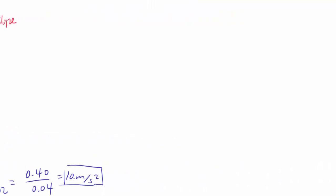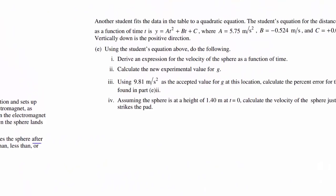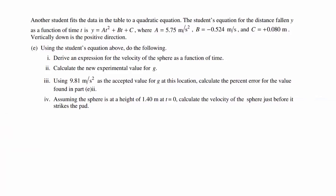Part E: Another student fits the data in the table to a quadratic equation instead of using linear regression. The student's equation for the distance fallen y as a function of time is given, where A, B, and C are constants. Vertically down is the positive direction. First, derive an equation for the velocity as a function of time.